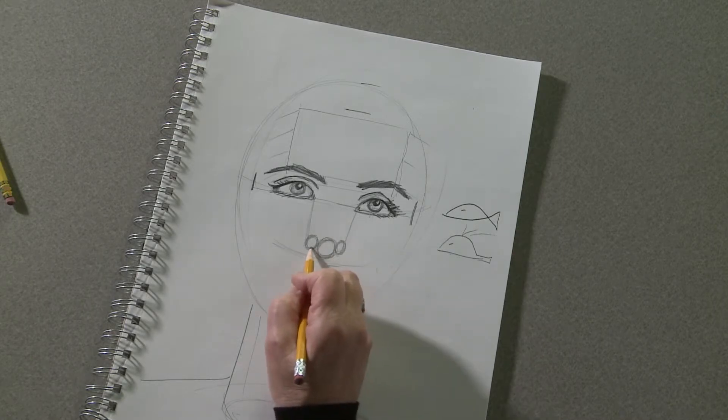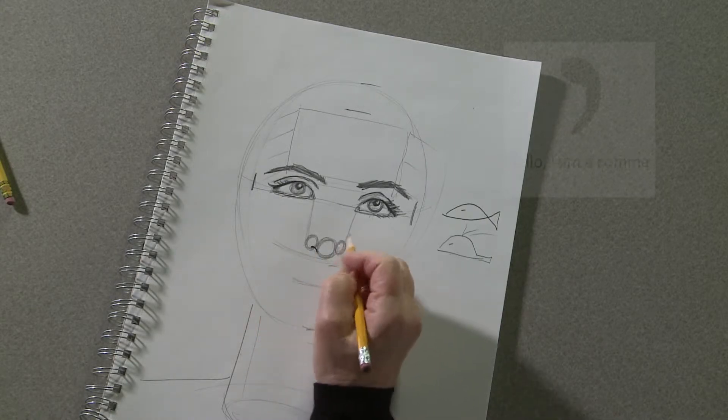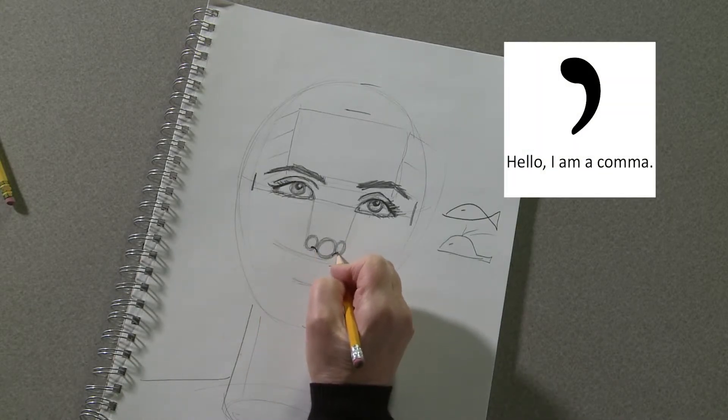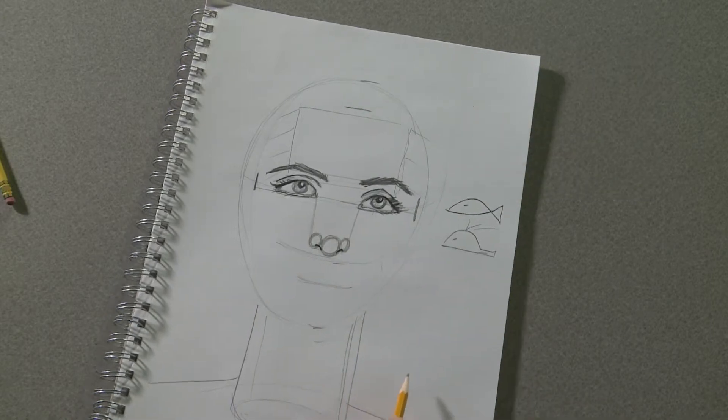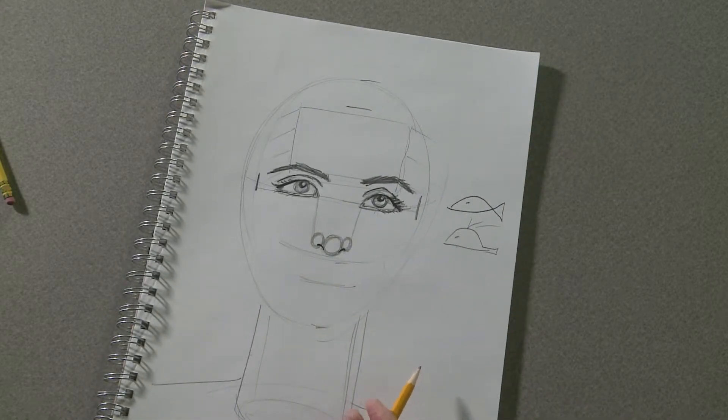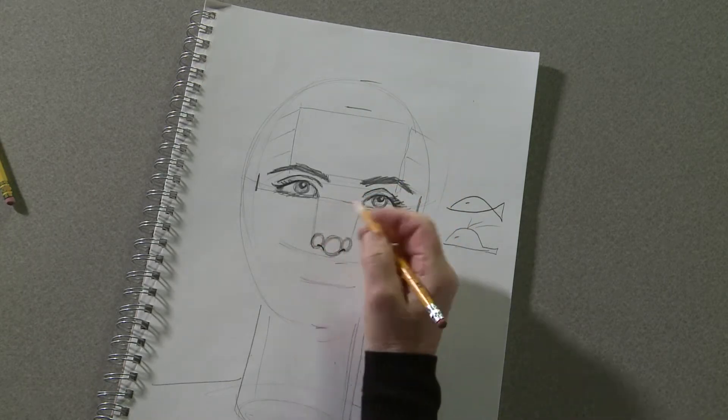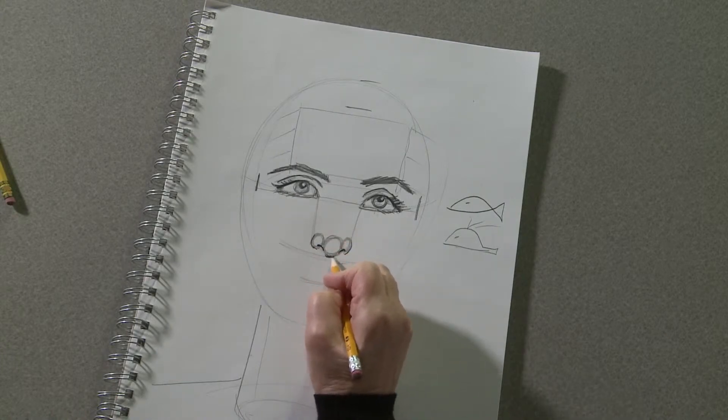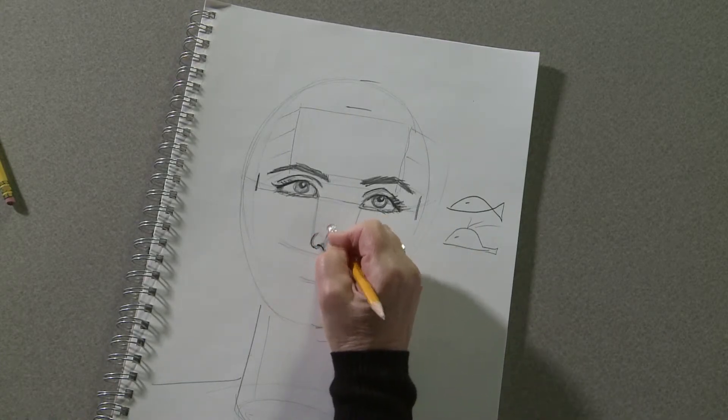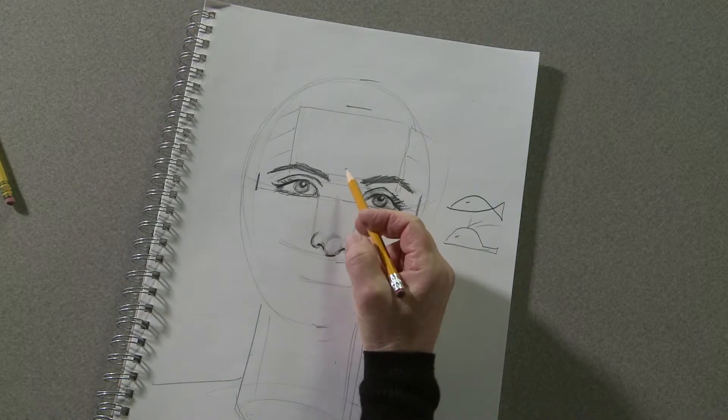Now for the nostrils, we're going to take little curved lines that sort of look like commas, upside down and backwards commas. Then we can darken this to look like an edge of the nostril. Don't connect anything, just let it fall like that. And then we can sort of take away some of this because it was only for a guide.